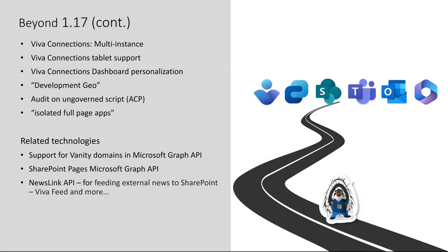A couple of things not SPFx-specific but relevant to you: SharePoint Pages in Microsoft Graph API is already there and we'll extend and make it more available soon. We're also building vanity domain support in Microsoft Graph — today if you go to /me/sites in a vanity domain tenant, that information isn't available in Microsoft Graph. We're adding that capability so you can see all vanity domains your tenant has, similar to how multi-geo information is already there in the same API.